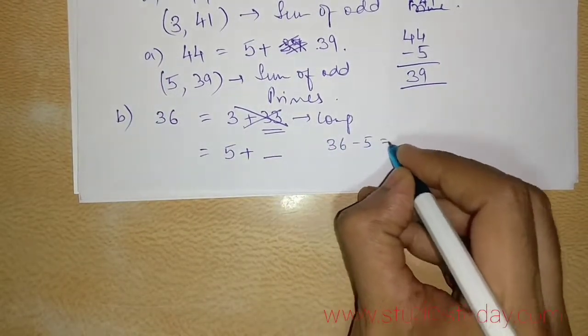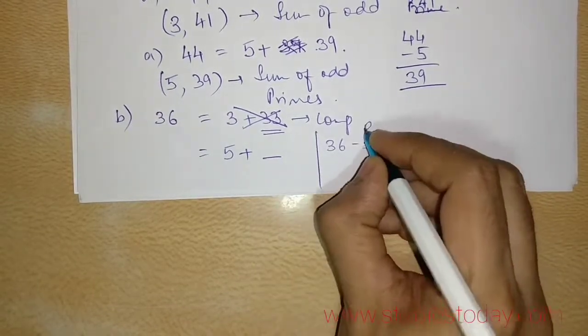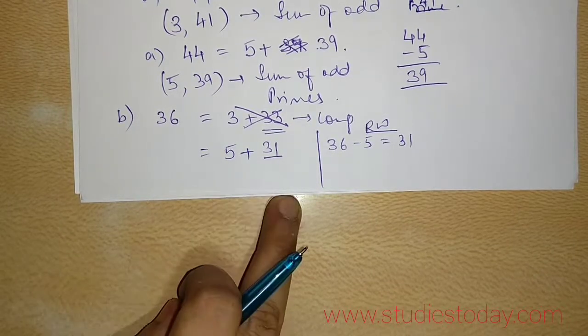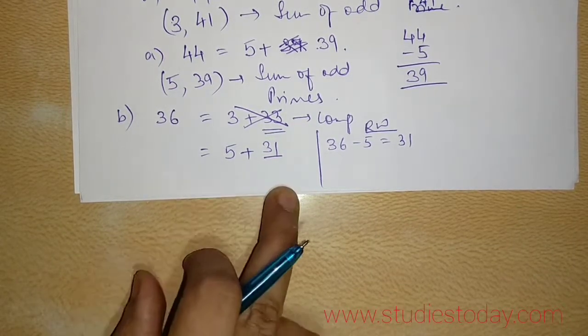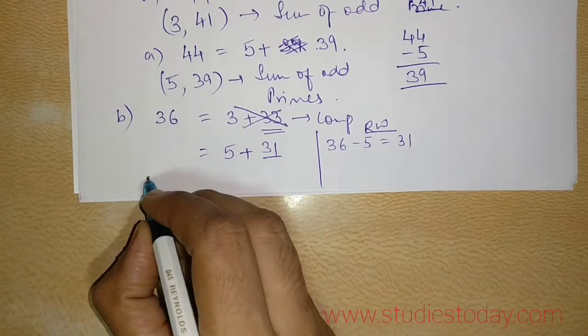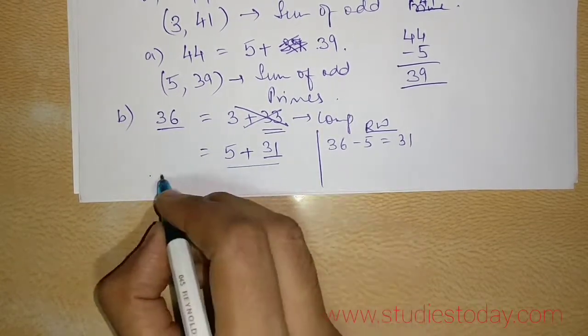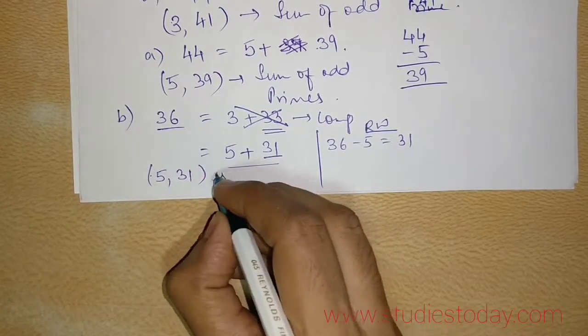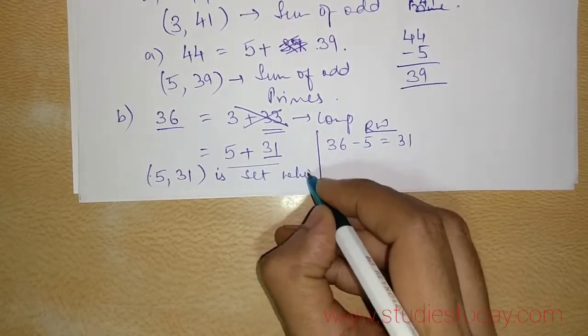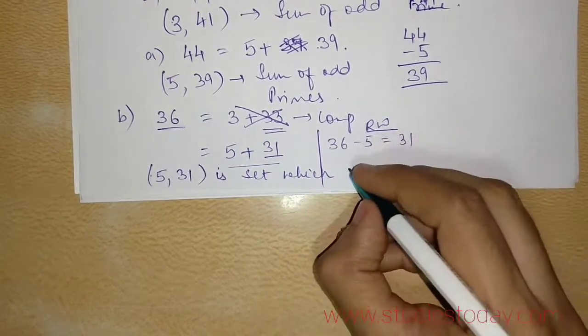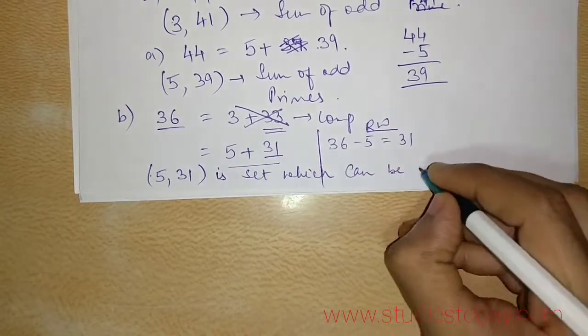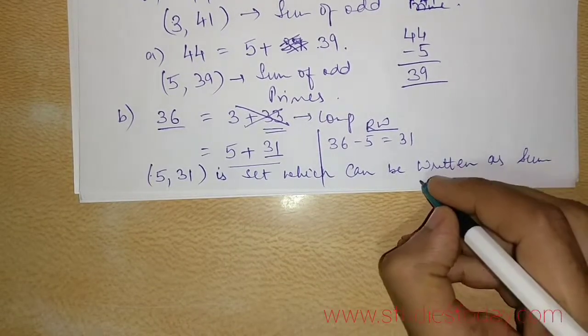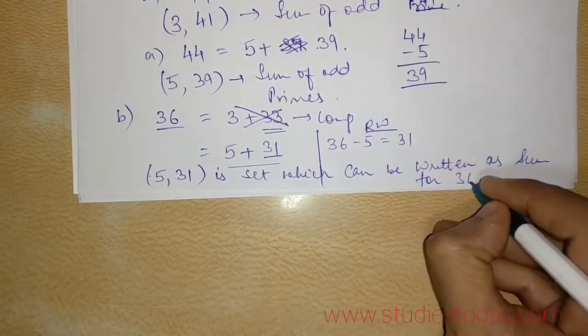5 plus what gives 36? So 36 minus 5, which is 31, which is your rough work column. So 5 plus 31, here 5 and 31, both are odd and both are prime. So I can write 36 as sum of the 2 odd primes. So 5, 31 is the set, which can be written as sum for 36.